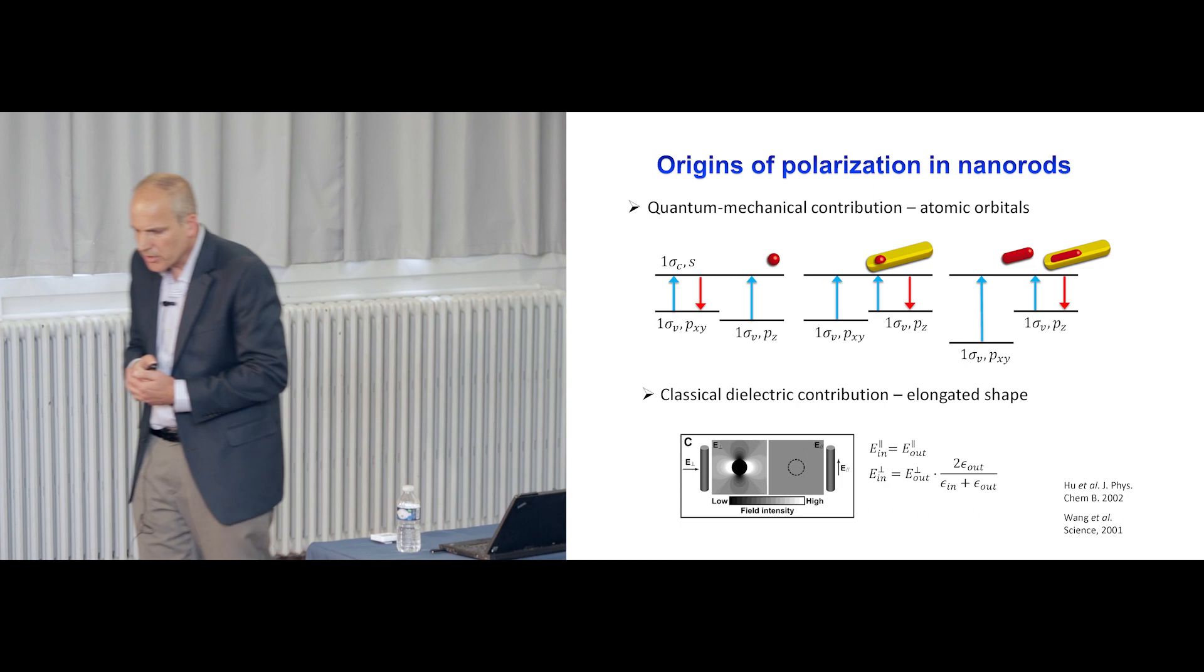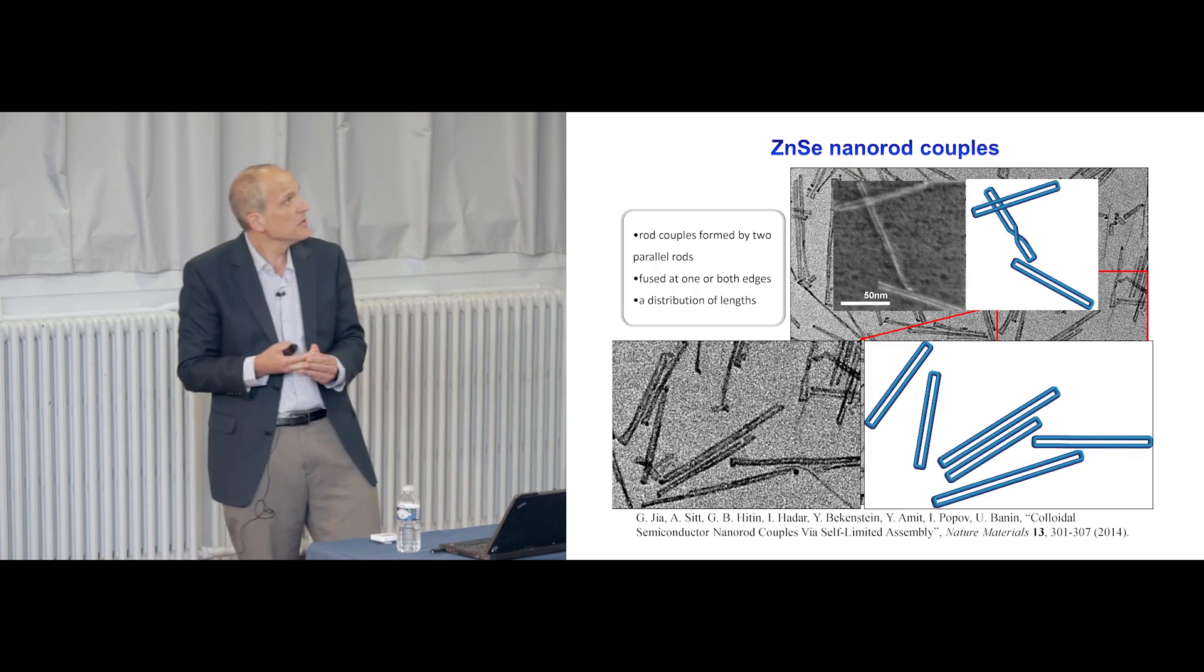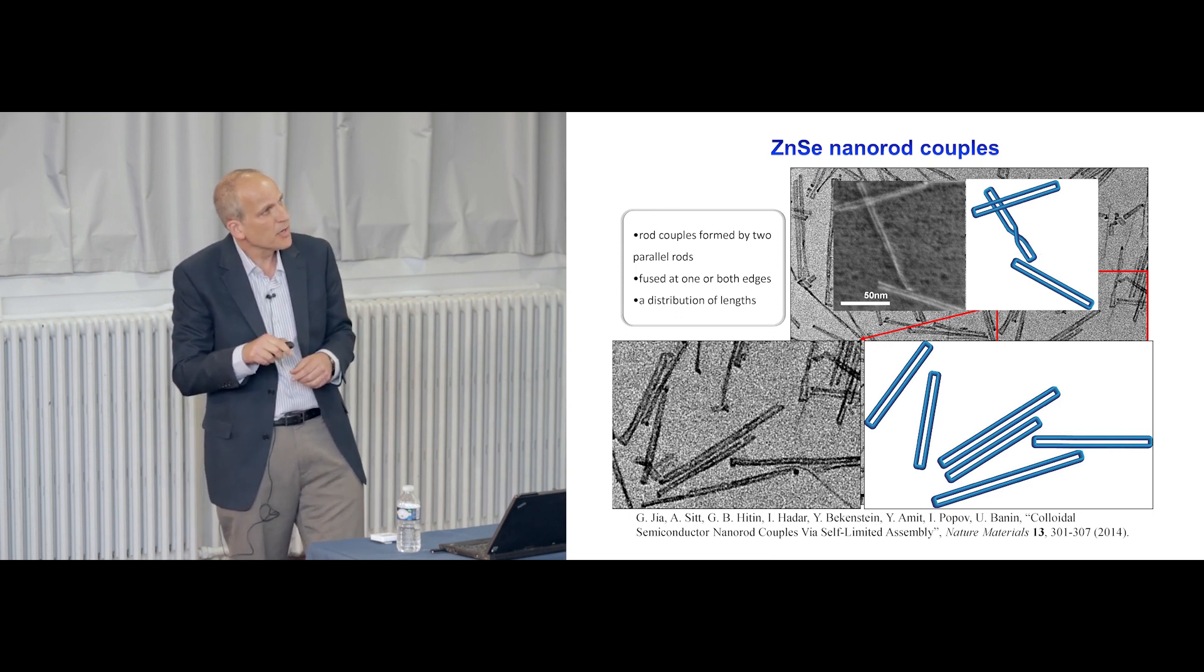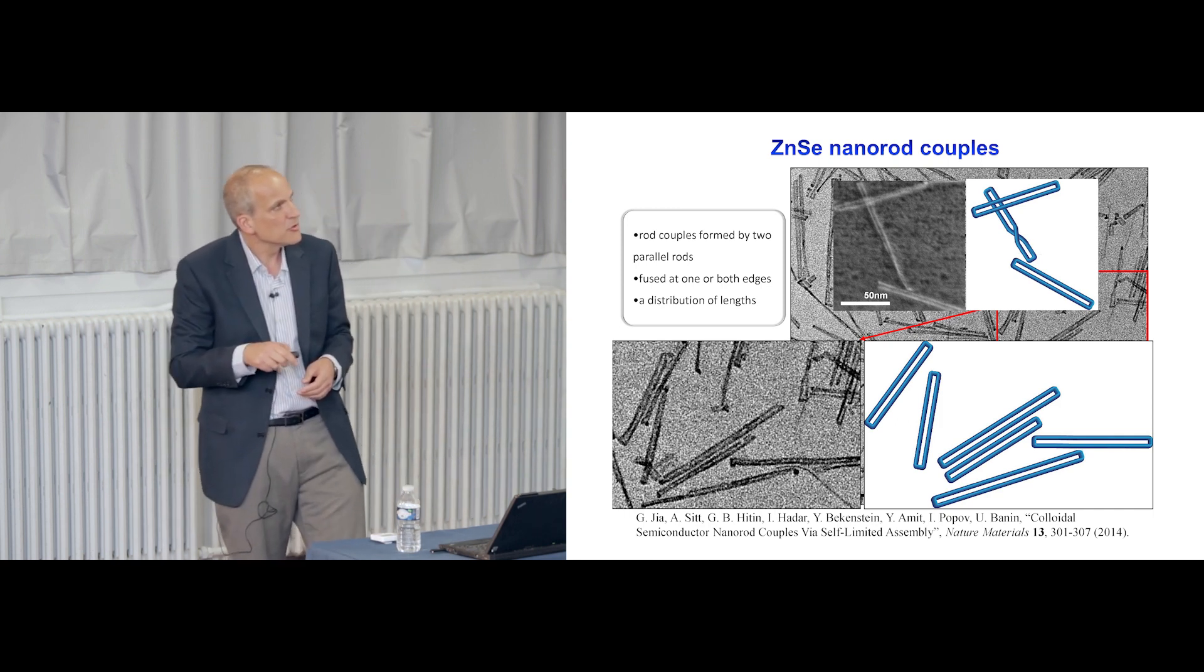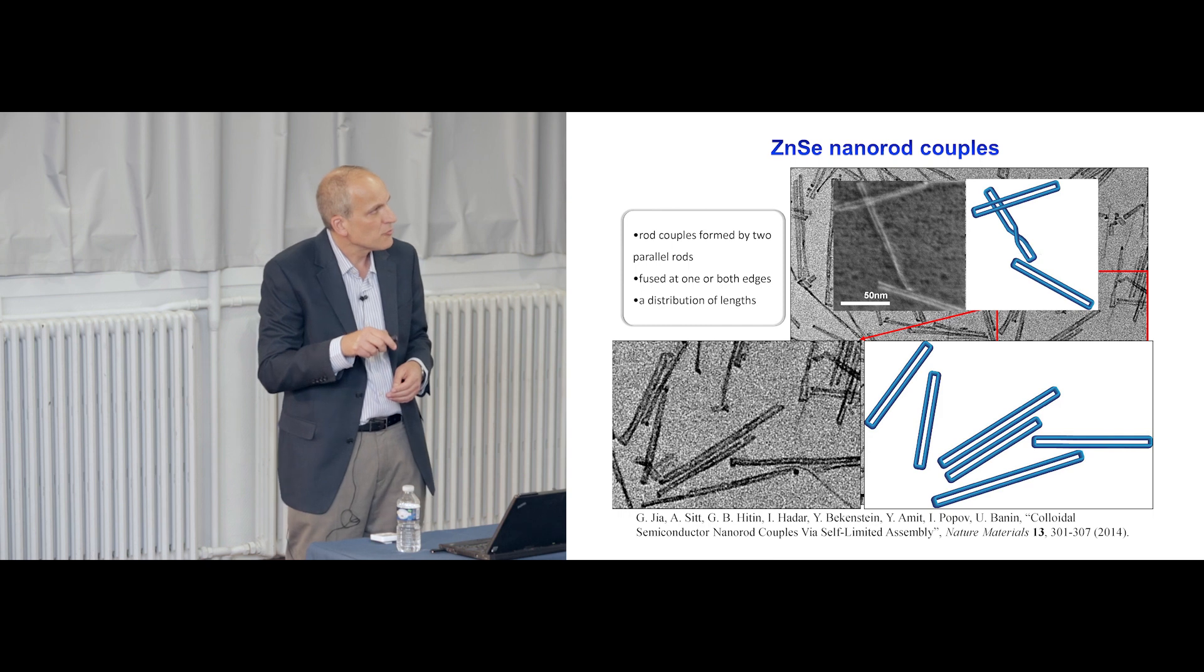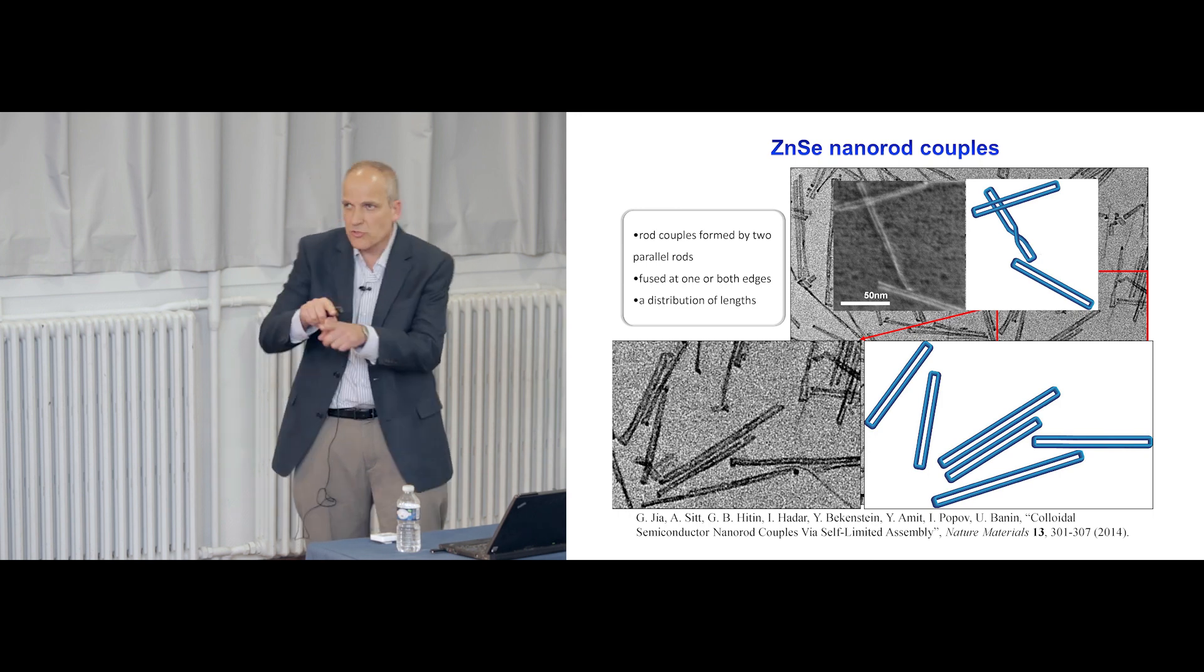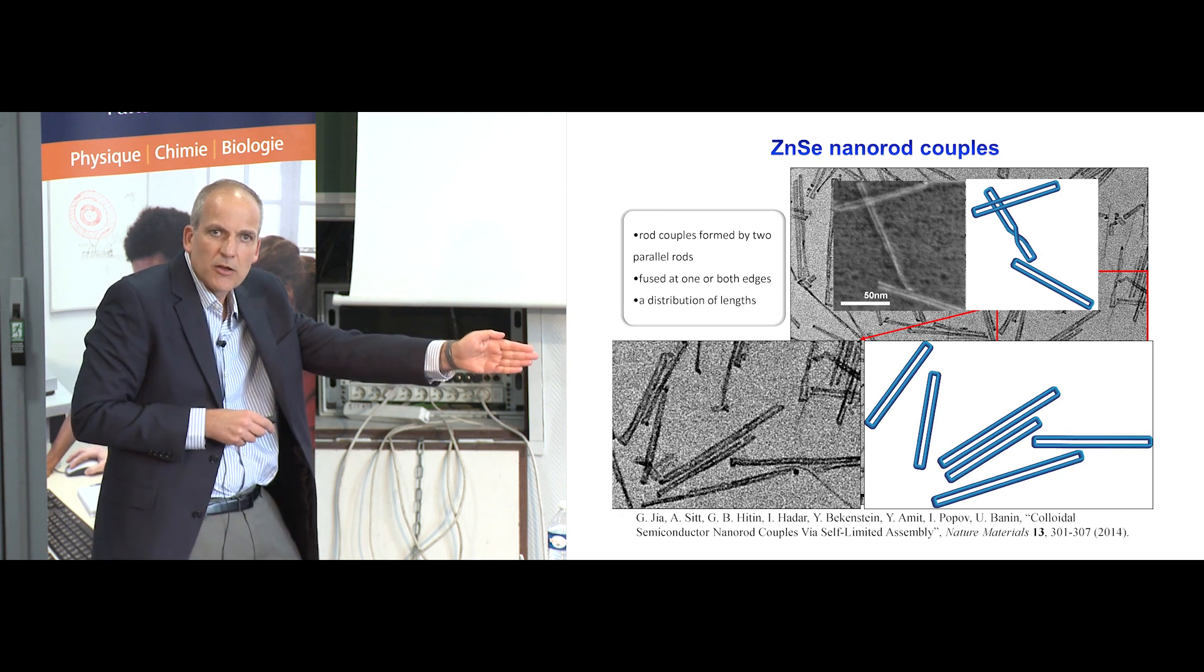And then in our quest to actually look at other systems and control their shapes, we've been working on zinc selenide. In zinc selenide you see that what we did in this synthesis, you see these very peculiar shapes. It looks like two rods coming together. We call this nanorod couples. This was recently published in Nature Materials. And if we zoom in here, you see a zoom in of these couples. They're actually linked at the edges with this growing region. And also the high resolution TEM very clearly shows two nanorods, which are actually, they can actually twist. That's why you see some twisting here also.